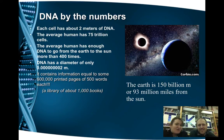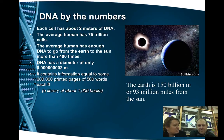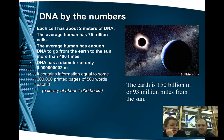Did you know that in each cell, if you pull the DNA out, it's about two meters of DNA? And you have about 75 trillion cells. So if you take two times 75 trillion, it's about 400 times more than the distance from the Earth to the Sun.